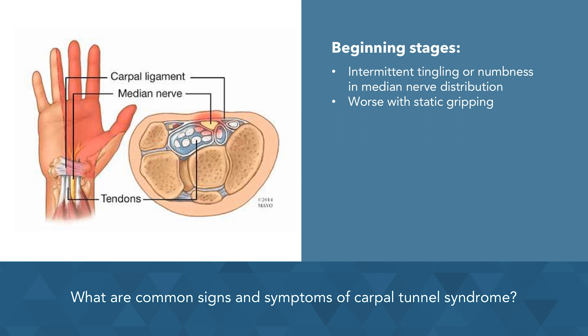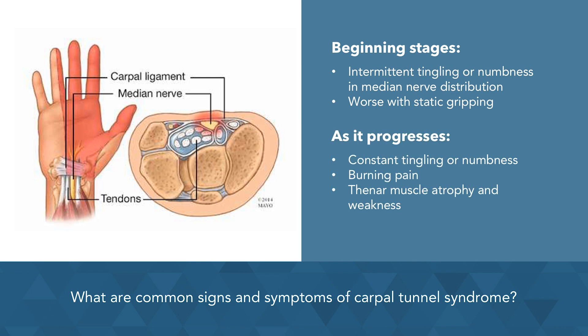Carpal tunnel is more common in older females, so examples of static gripping might include holding a steering wheel, chopping vegetables, or gripping a walker. As carpal tunnel syndrome progresses, patients often complain of tingling or numbness that is constant and frequently accompanied by a feeling of burning.